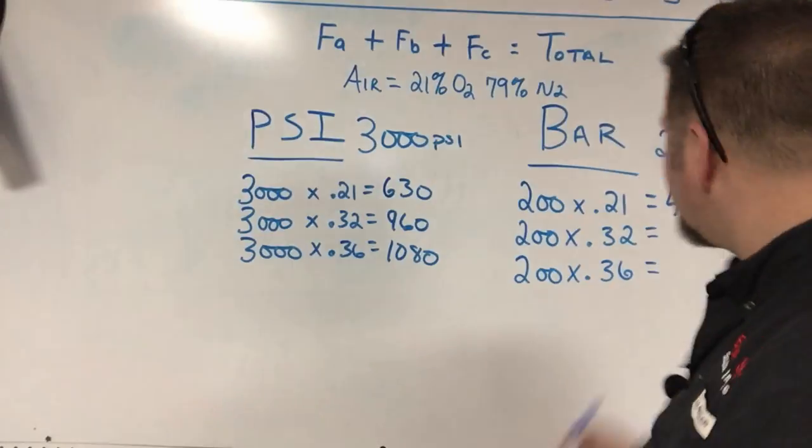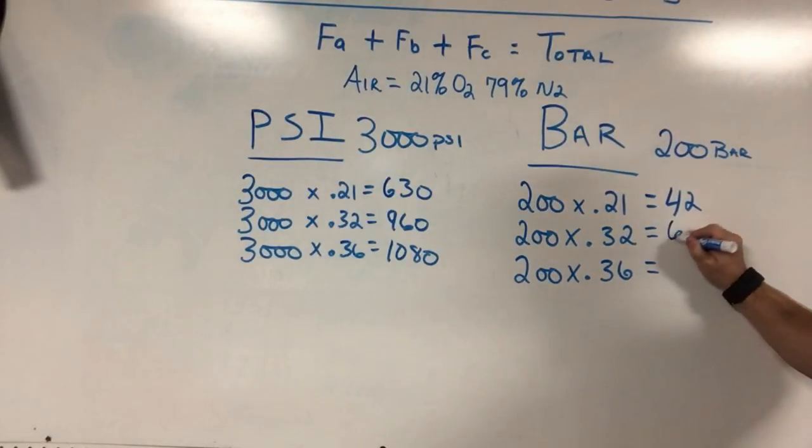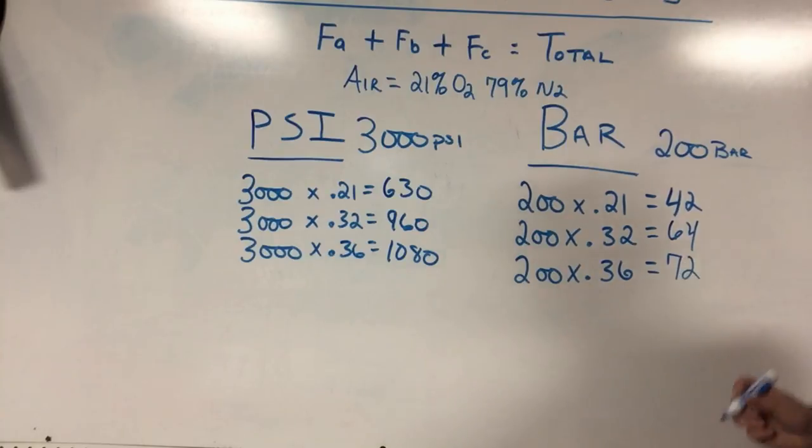It's very simple, and I'll do the math on these other ones. A 32% blend is 64 bar, and a 36% blend is 72 bar.